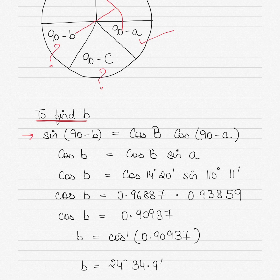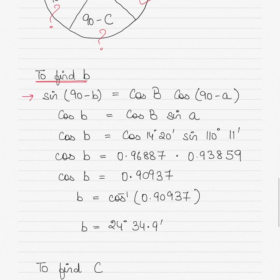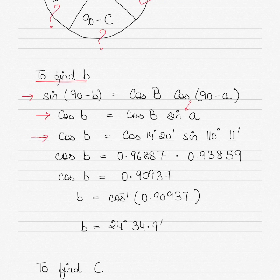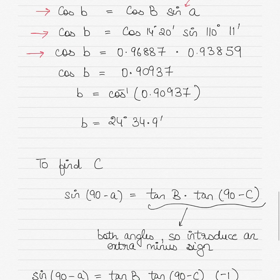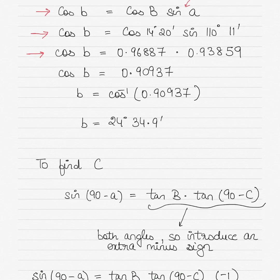If both terms on the right-hand side were angles, I would use a negative sign, as in the next equation. So sin(90−B) equals cos(B) · cos(90−A). Sin(90−B) can be written as cos B, and cos(90−A) can be written as sin A. So cos B equals cos(angle B) · sin(A). Substitute the given values and keep five decimal places — the more decimal places, the greater the accuracy.